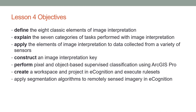The objectives for Lesson 4 are: define the eight classic elements of image interpretation; explain the seven categories of tasks performed with image interpretation; apply the elements of image interpretation to data collected from a variety of sensors; construct an image interpretation key; perform pixel- and object-based supervised classification using ArcGIS Pro; create a workspace and project in eCognition and execute rule sets; and apply segmentation algorithms to remotely sensed imagery in eCognition.